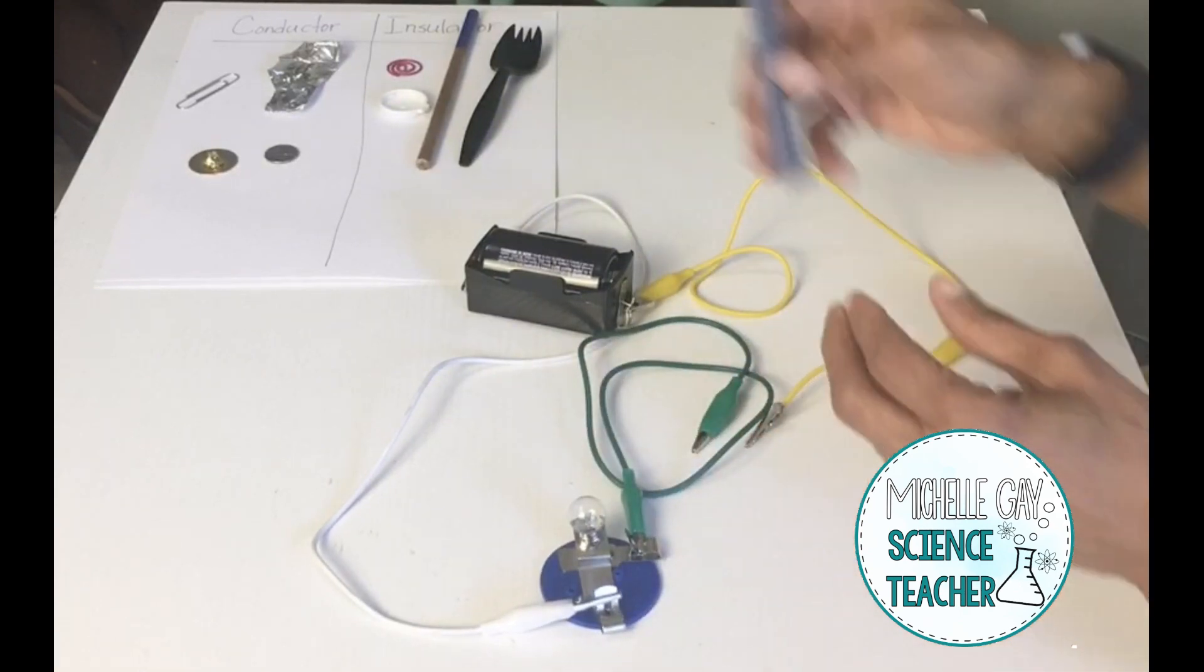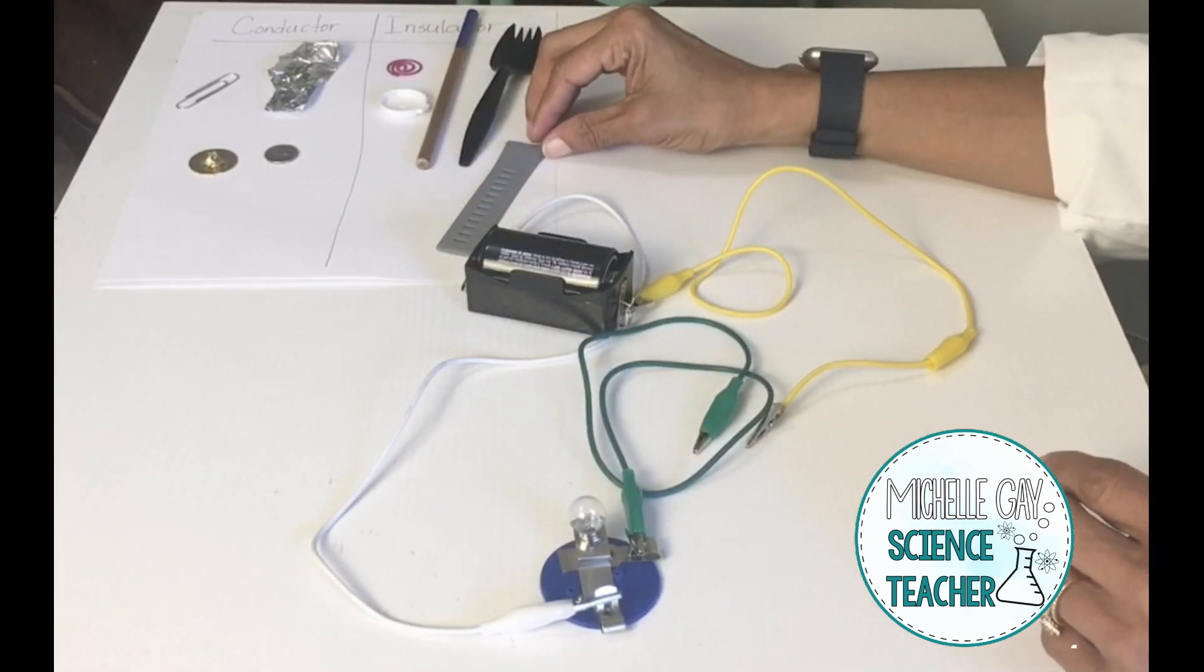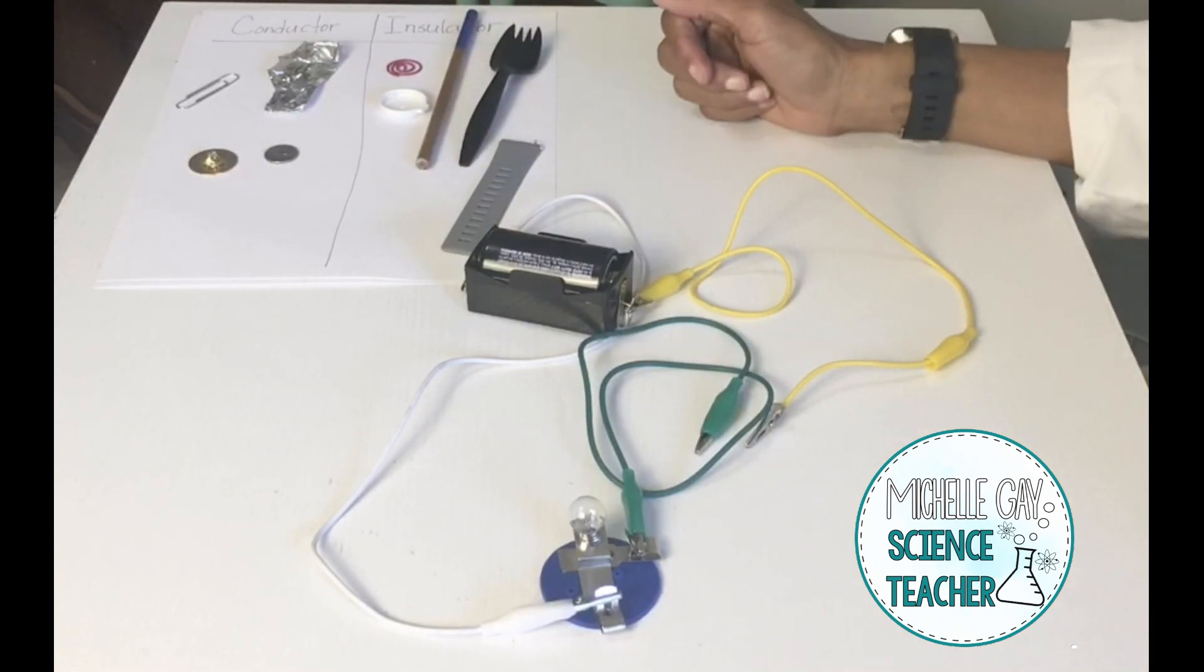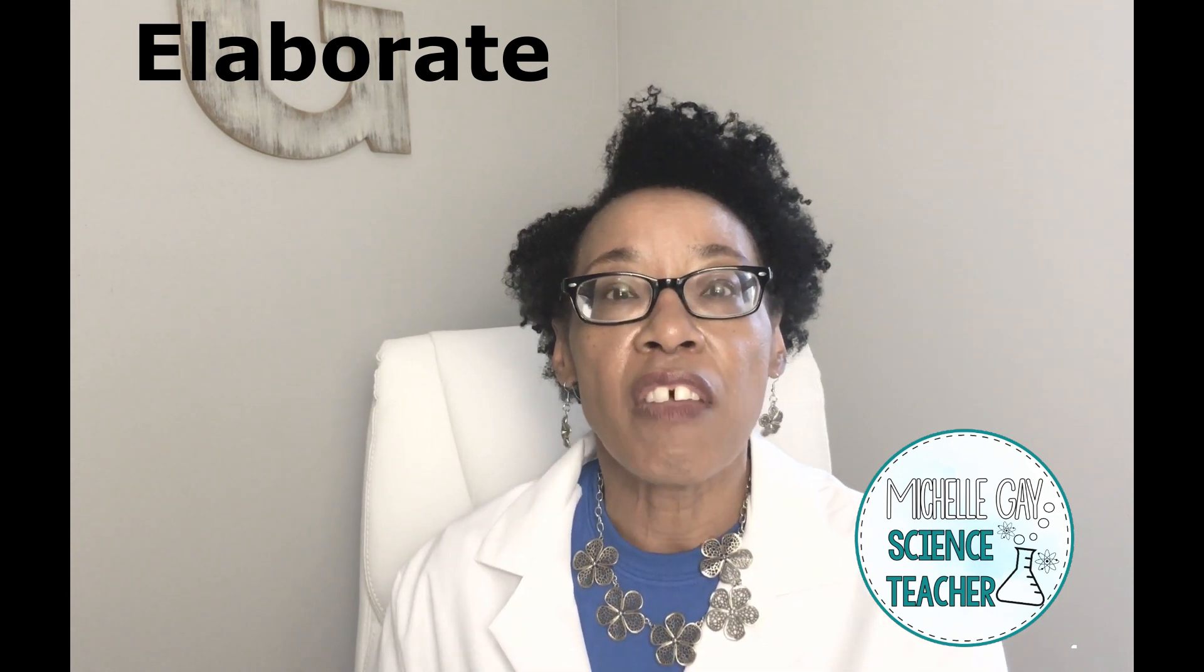Now when you test your materials look at what they're made of and determine why is it important to have conductors and insulators for electricity. Why do we need both? Conductors and insulators are both important. We need the conductors in order for the electricity to flow so that we can have things that work like our lights, our stove, our refrigerator, hair dryer, anything that takes electricity. But insulators are just as important because insulators are the things that keep us safe from electricity so that we don't get shocked or we don't get burned.